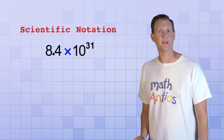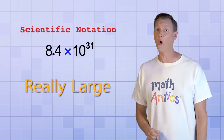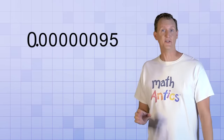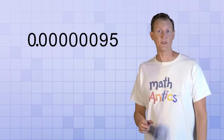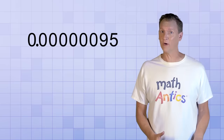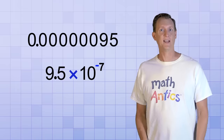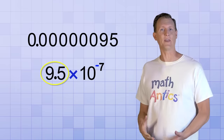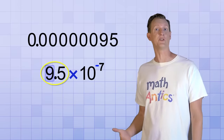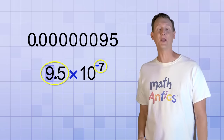So scientific notation is very useful when it comes to writing down really large numbers or really small ones. For example, this number is really small: 0.00000095. It's much less than 1, but it's not 0. And here's the same number written in scientific notation. It consists of a number that has only one digit to the left of the decimal point, which is being multiplied by 10 to a certain power. But do you notice anything different about the exponent? Yup, it's negative. So what does that mean?